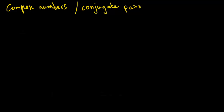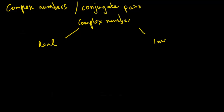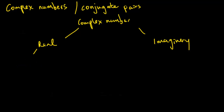In this lecture, let's talk about introductions to complex numbers and conjugate pairs. Before that, I want to talk about numbers in general. At the top of the chart we have complex numbers, and underneath that we have real numbers and imaginary numbers. Underneath the real numbers we have rational numbers and irrational numbers.